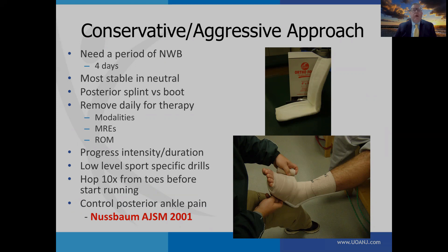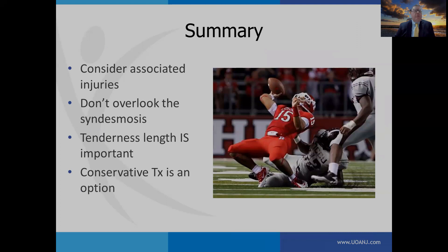In our 2001 article, we detailed our conservative aggressive approach, using a posterior splint rather than a boot. We want to make sure they're non-weight-bearing for four days — because that's when athletes said they could start bearing some weight and doing more functional activity. You gradually progress rehabilitation intensity and duration, and when they can do 10 hops from their toes, they can start running. If they're getting posterior ankle pain, it's an indication they're doing too much — back off activity and get that under control.